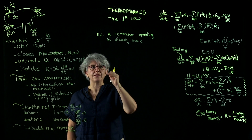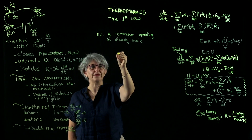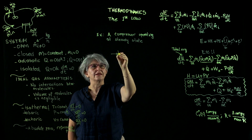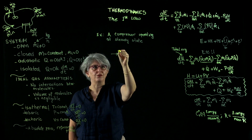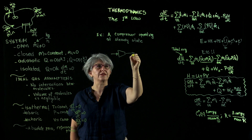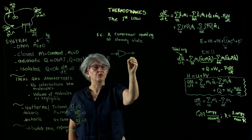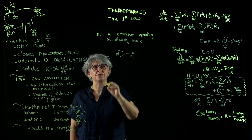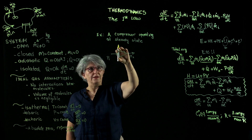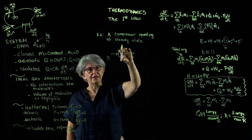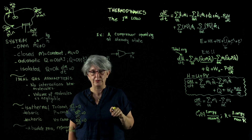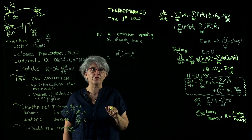Compressors are devices that operate at steady state. They take in gases at a certain pressure and volume and compress the gas, so the pressure increases from P1 to P2. We indicate the compressor with a larger inlet and smaller outlet because the gas is compressed and its specific volume and the total volumetric flow rate has decreased.